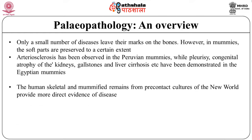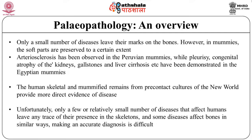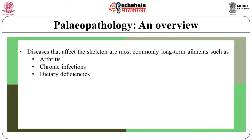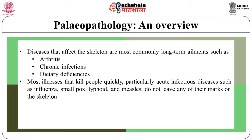The human skeleton and mummified remains from pre-contact cultures of the New World provide more direct evidence of disease. Unfortunately, only a relatively small number of diseases that affect humans leave any trace in the skeleton, and some diseases affect bone in similar ways, making accurate diagnosis difficult. Diseases that affect the skeleton are most commonly long-term ailments such as arthritis, chronic infections and certain dietary deficiencies. Most illnesses that kill people quickly — particularly acute infectious diseases such as influenza, smallpox, typhoid and measles — do not leave any mark on the skeleton.